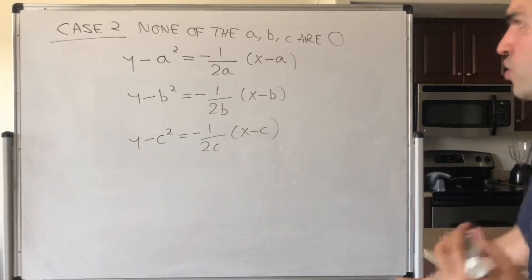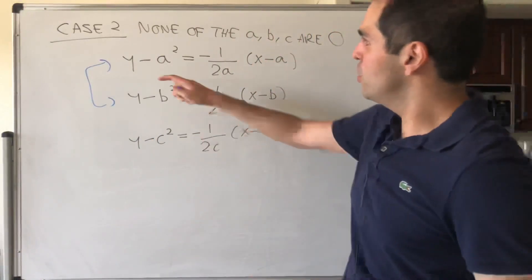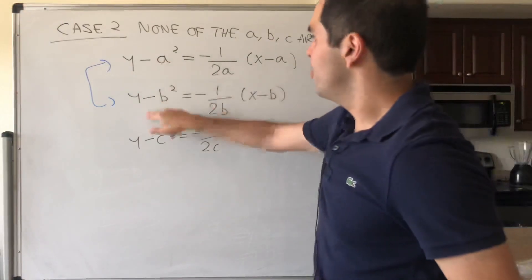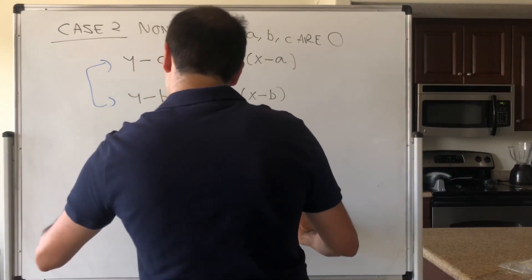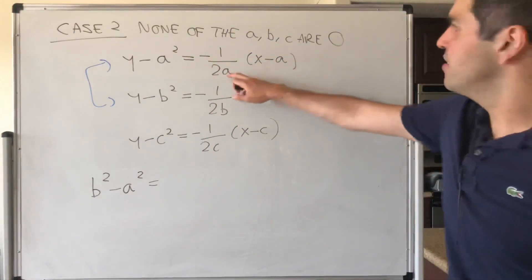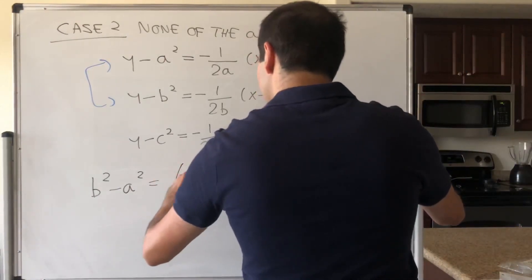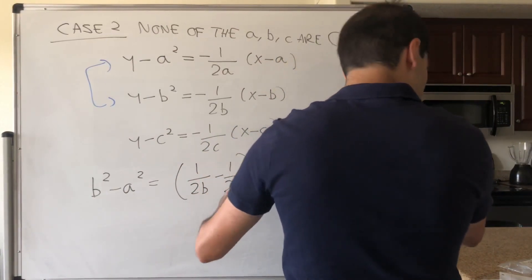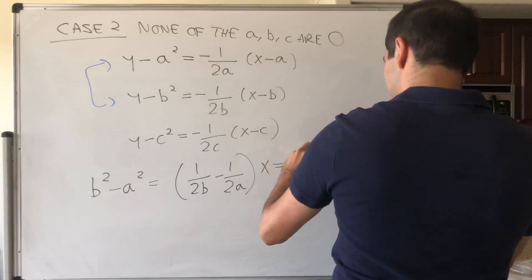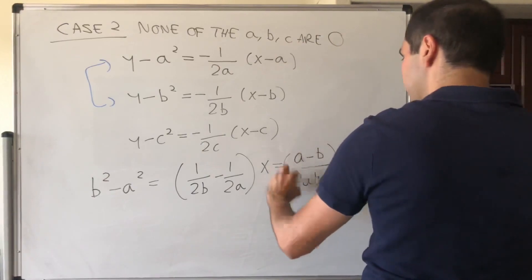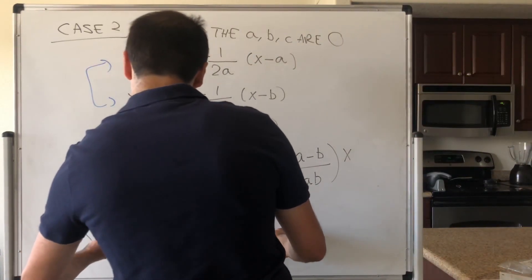And then what we have to do is just a little bit of algebra, and by the way, here's where the calculus stops. For instance, what we can do, we can do this minus this, so this equation minus this equation, then what happens is that the y's cancel out, and what you end up with is b squared minus a squared. And then here also there's a cancellation, because remember, this becomes 1 half. This becomes 1 half, so you're left with 1 over 2b minus 1 over 2a times x, which then you can simply simplify to a minus b over 2ab, which is common denominator,